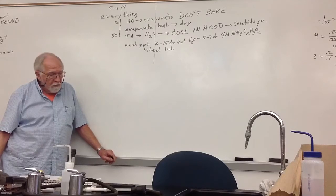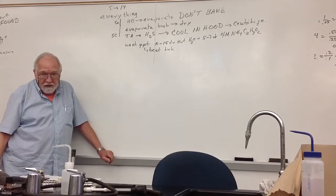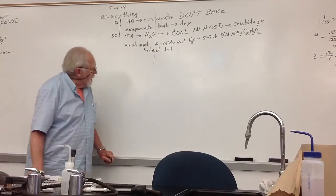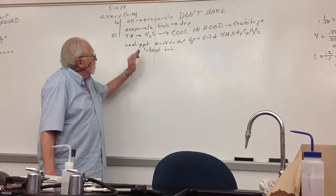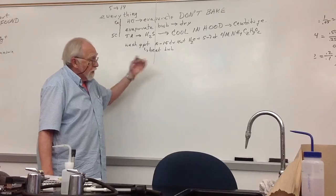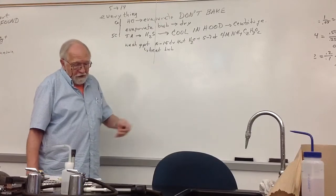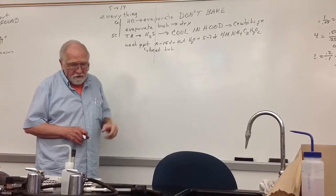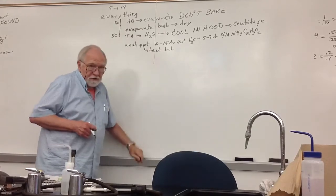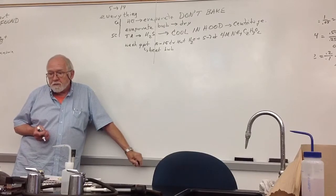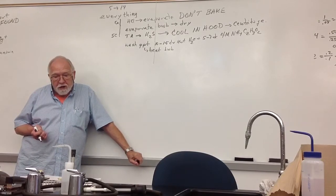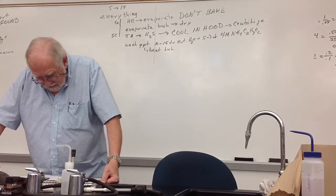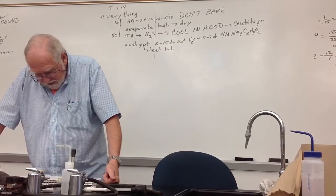And again, the question comes up, what do I do with the decantate? If it doesn't say anything, you always discard. That's the washing, and that's what's confusing because it says add equal volumes of the hot water and the ammonium acetate. You can mix it directly in the test tube with your precipitate. After you've washed it, it says go to procedure six.